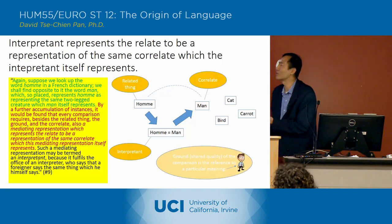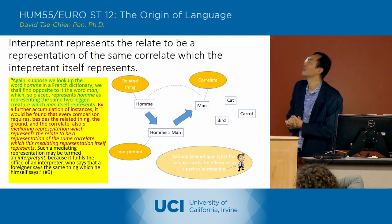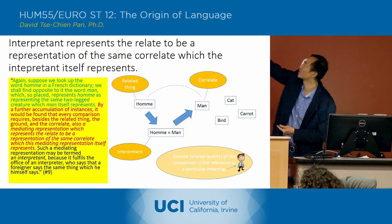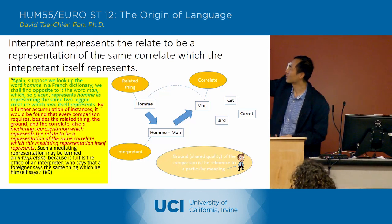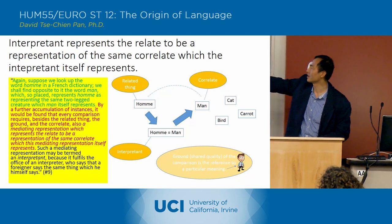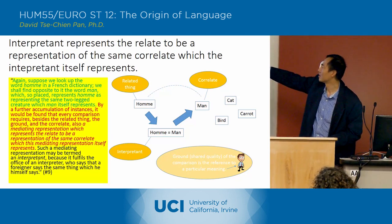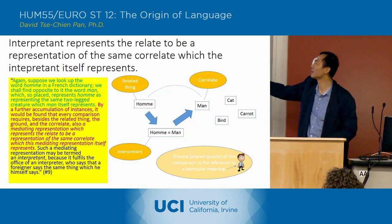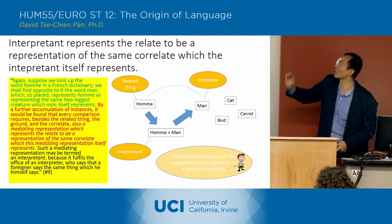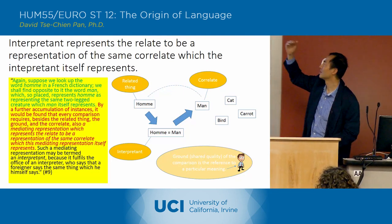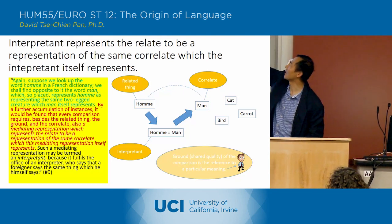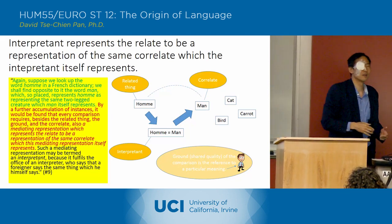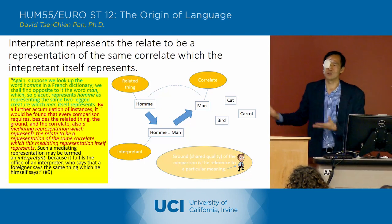So what we've got here are four pieces that exist in every comparison: we've got the related thing, we've got the correlate, we've got the ground — the shared quality of the comparisons, which is the reference to a particular meaning, to 'man'. And then we've got the interpretant. So the interpretant is — even if the related thing and the correlate have a shared quality, the interpretant is defining the way in which they share that quality.